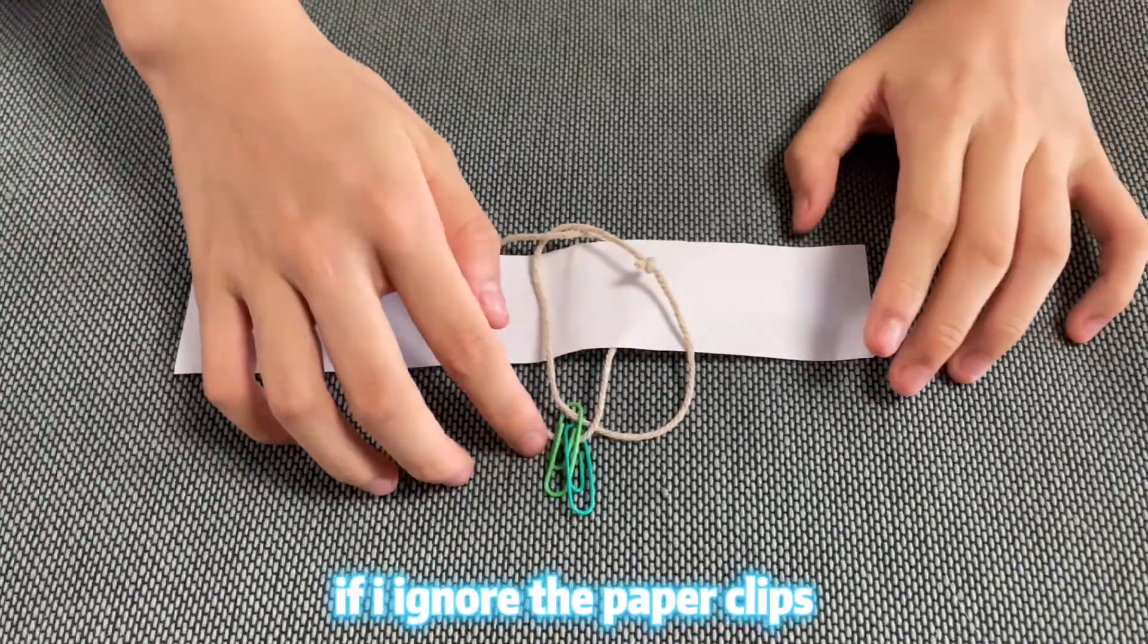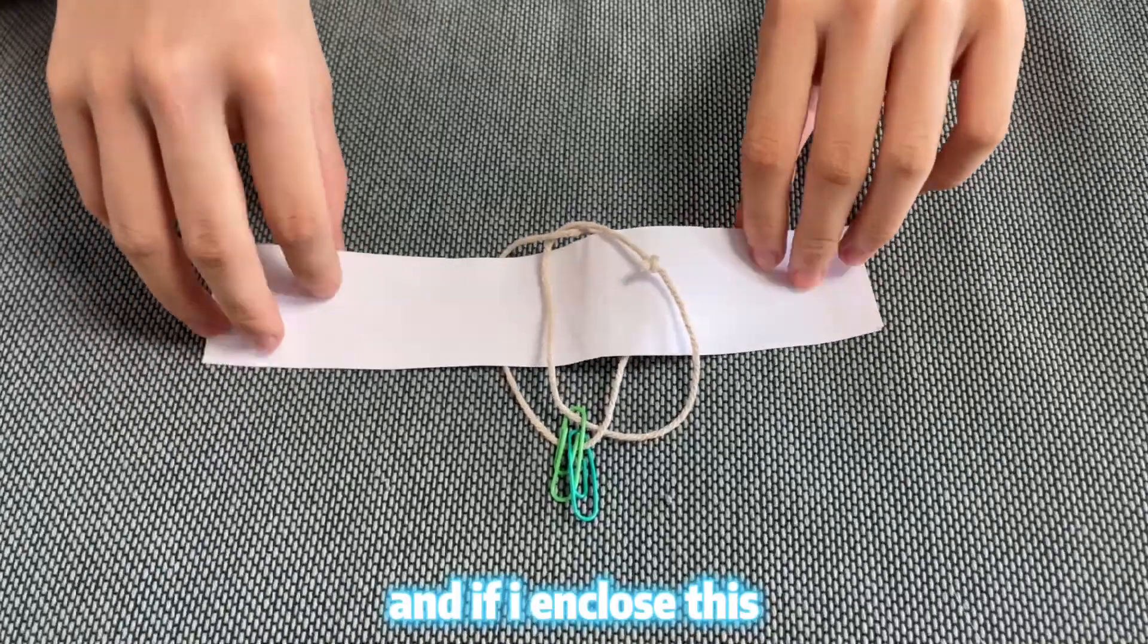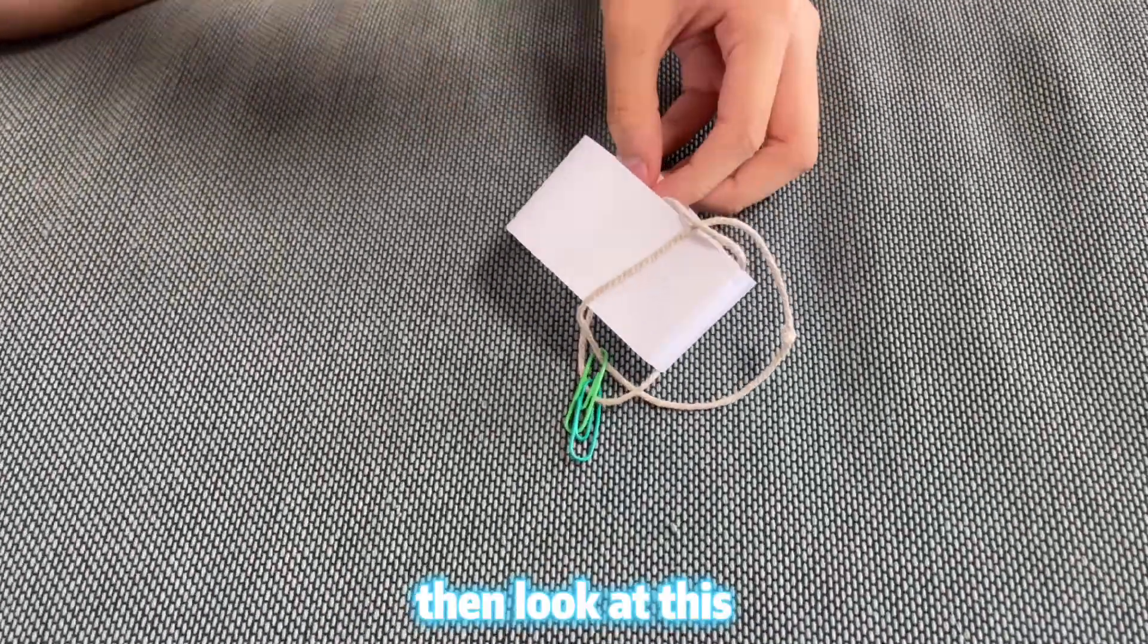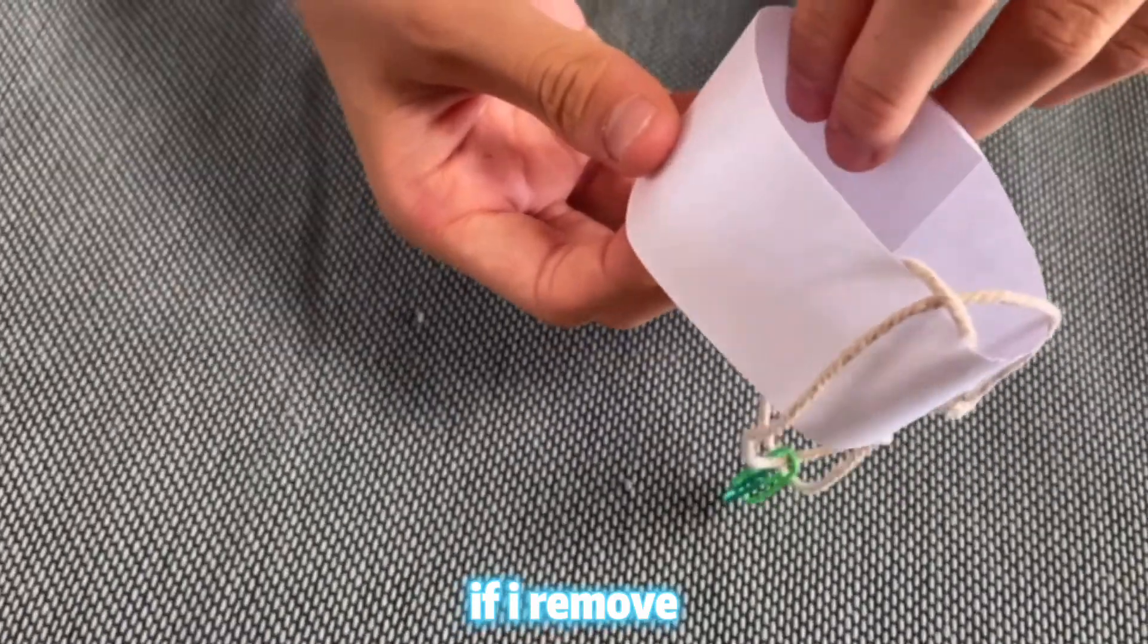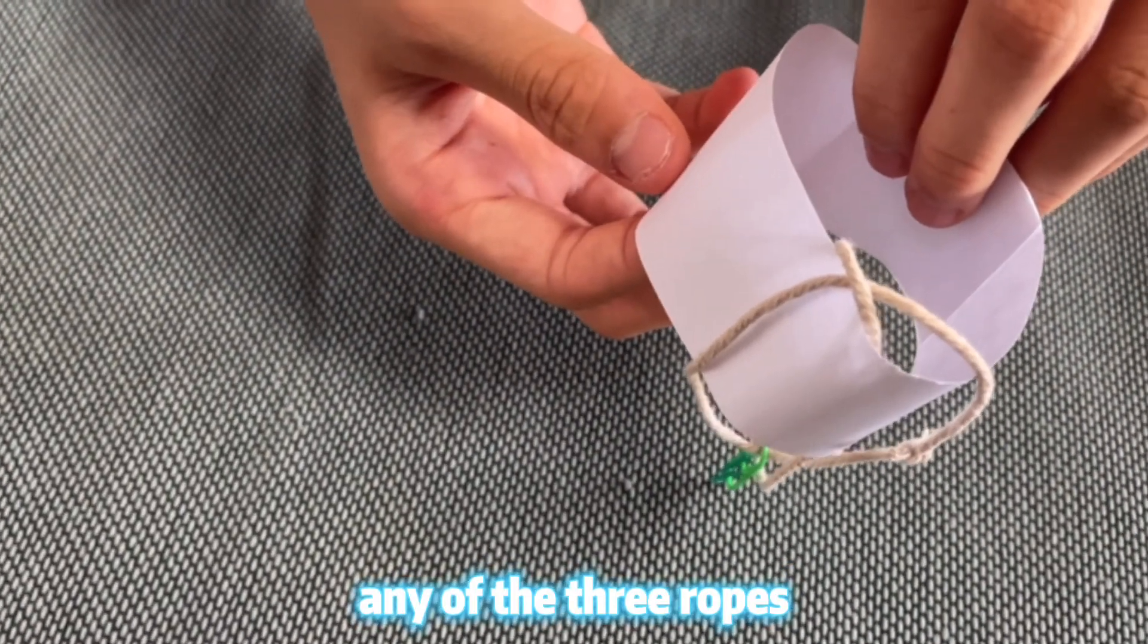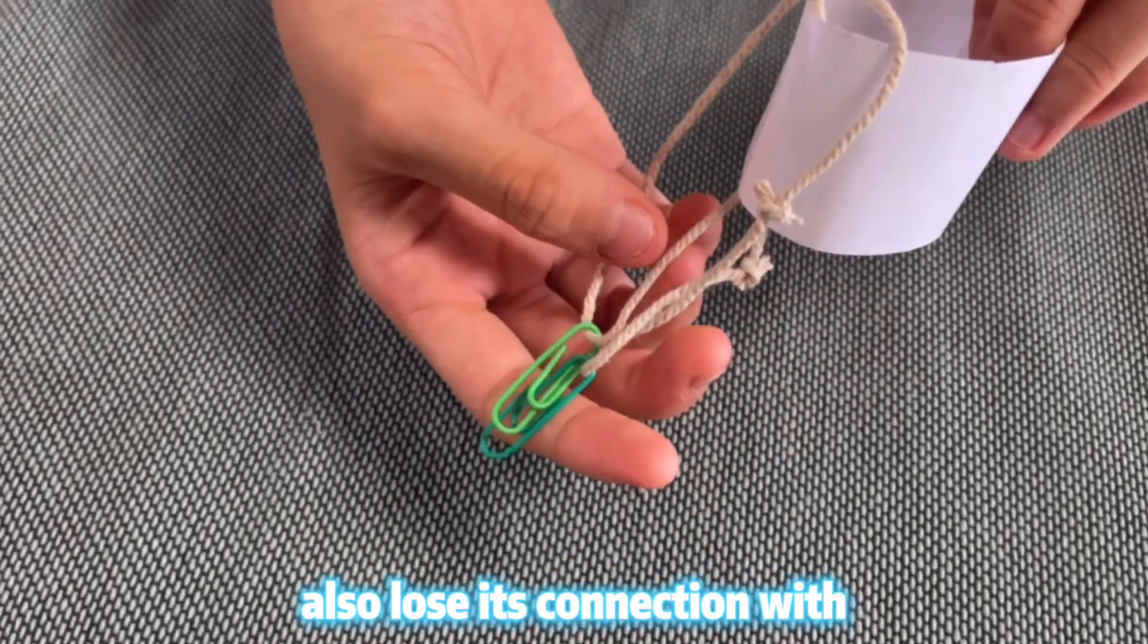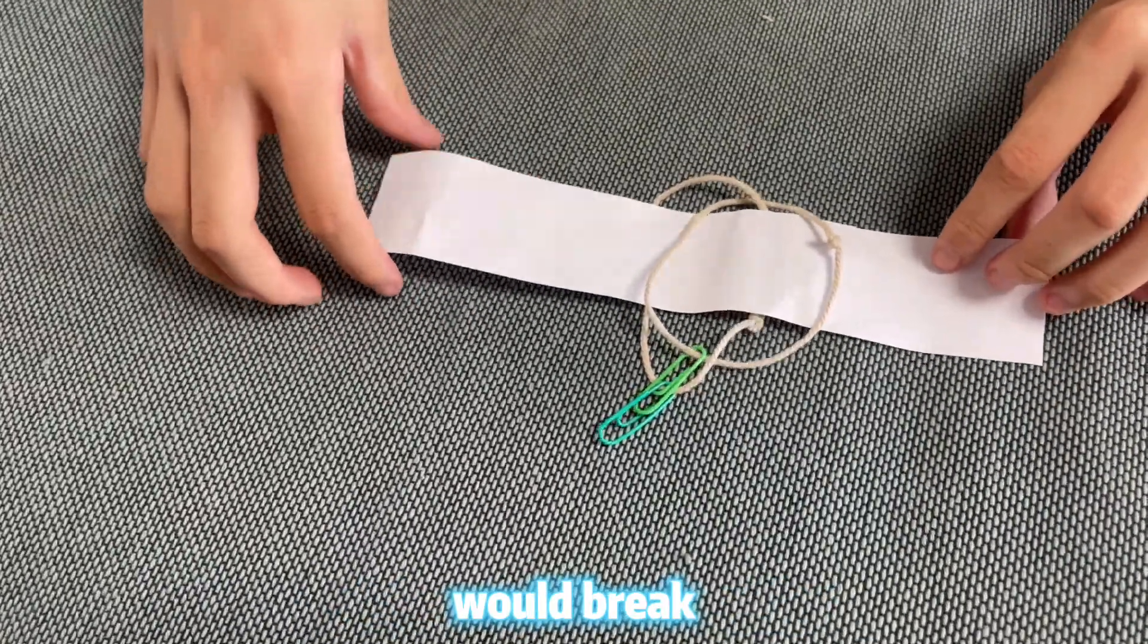If I ignore the paperclips and if I enclose this, then look at this. If I remove any of the three ropes, the other two would also lose its connection with each other and the whole construction would break.